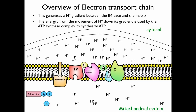When hydrogen moves down its gradient through the enzyme called ATP synthase — remember, any enzyme ends in -ase — hydrogens are allowed to pass through ATP synthase. That movement of hydrogens generates energy, and that energy is harnessed by this enzyme to form ATP. Here are the hydrogens moving down their concentration gradient, and that energy is harnessed into the bond between inorganic phosphate and ADP, forming adenosine triphosphate. The more NADH and FADH2, the more hydrogens are pumped; the greater the concentration gradient, the more ATP can be produced.